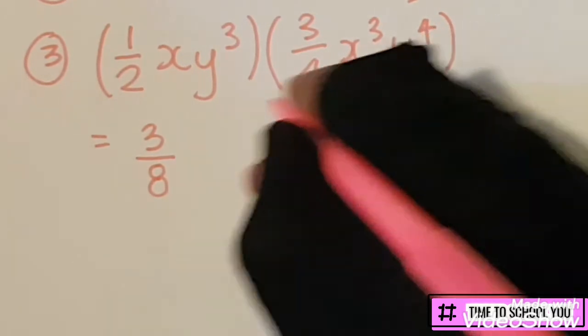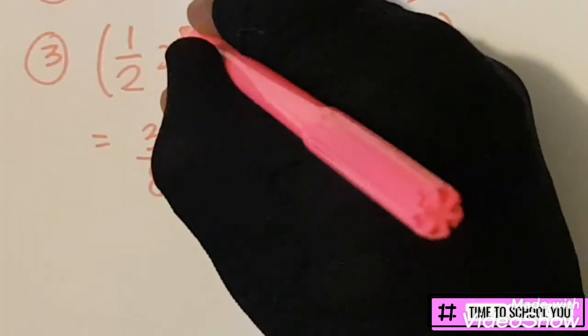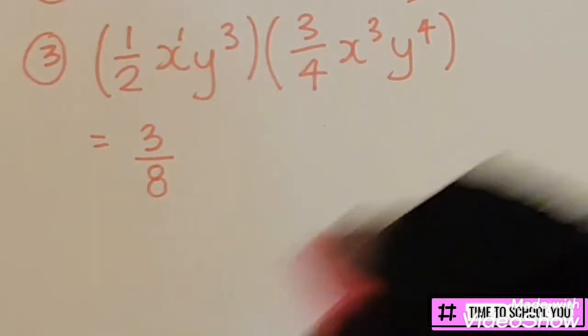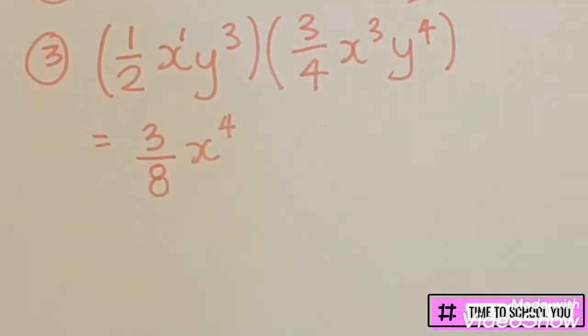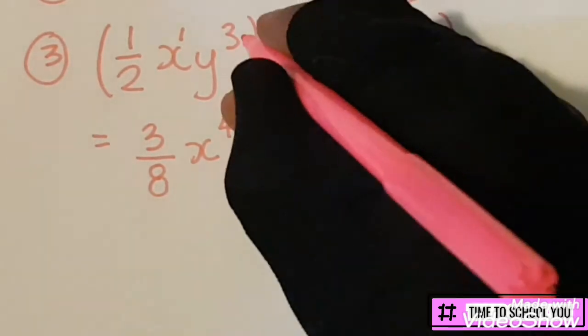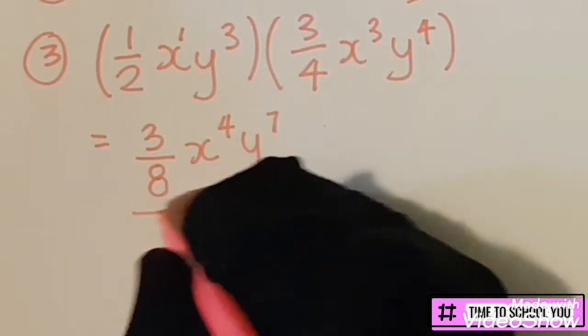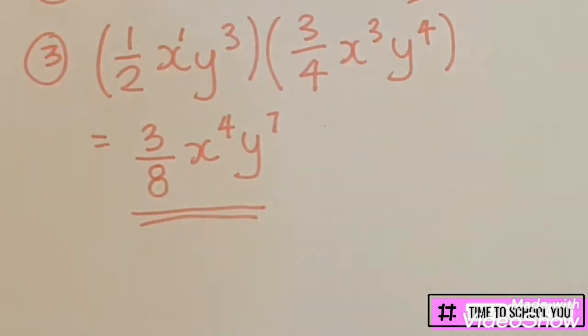Then we multiply the bases that are the same, so we multiply the terms, the variables. And we find that this is x to the power 1, so we'll add the powers, so it's x^4, and we get y^(3+4) is 7. And we can't simplify any further, so we leave our answer in this form.